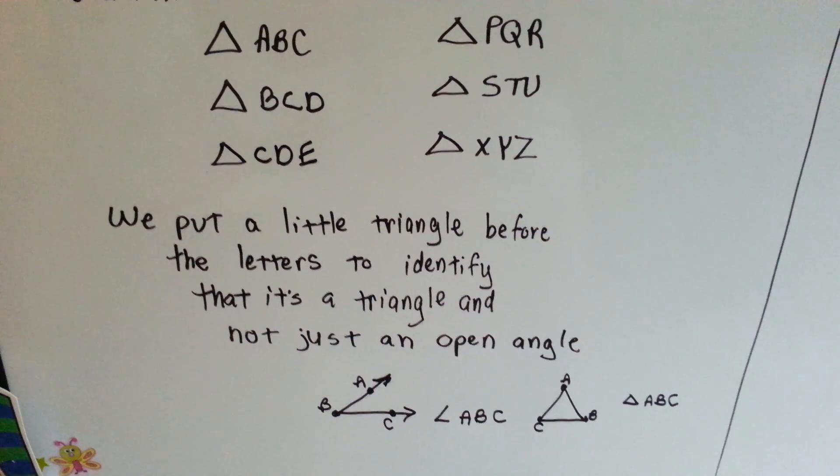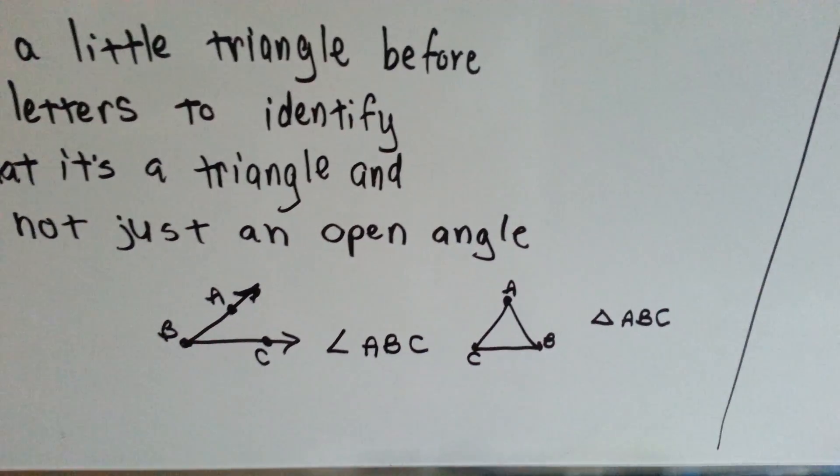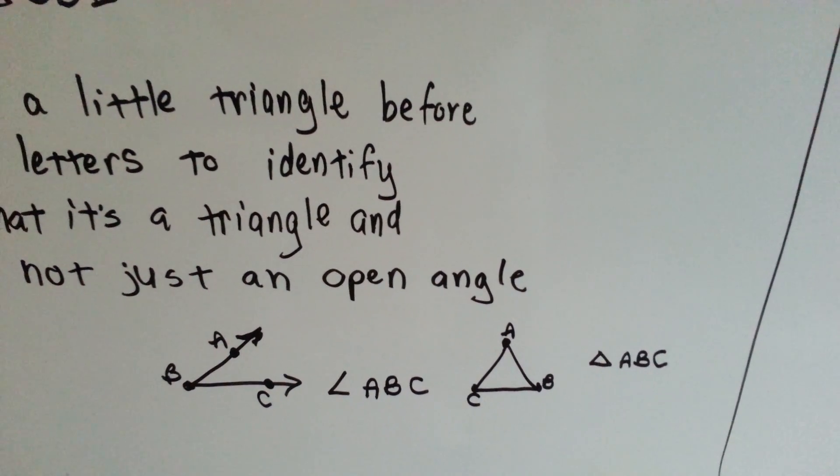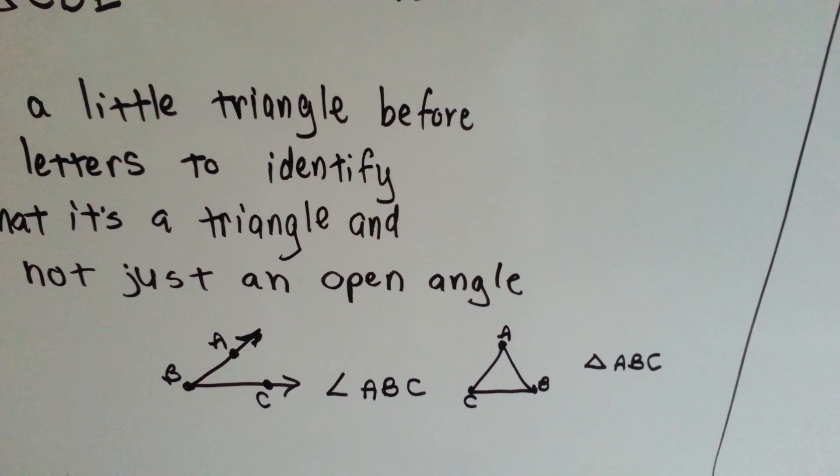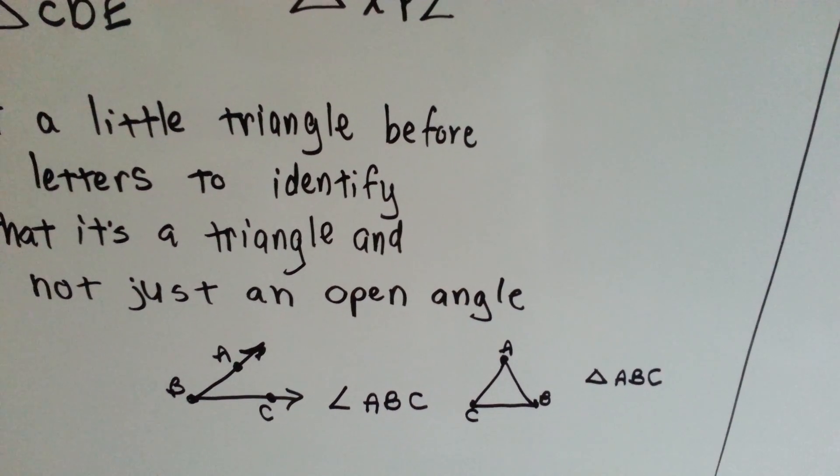Angle ABC is written with a little angle sign in front of it. Triangle ABC is written with a little triangle in front of it. That way we don't confuse one for the other. You have to put the little angle sign or the little triangle sign in front of the letters.